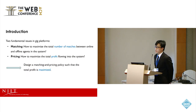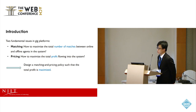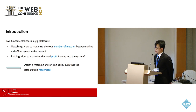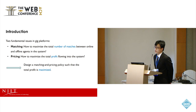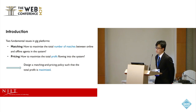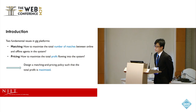With the increasing popularity of gig platforms, there are two fundamental issues that are associated with it. The first is matching, where we aim to maximize the total number of matches between online and offline agents in the system. The second one is pricing — given that a match will generate a certain revenue, how can we maximize the total profit flowing into the system from those matches? In this work, we tackle these two issues simultaneously by designing a matching and pricing policy such that the total profit is maximized.